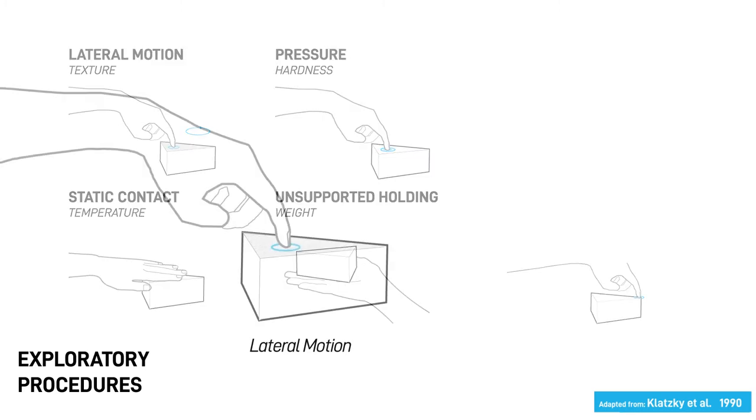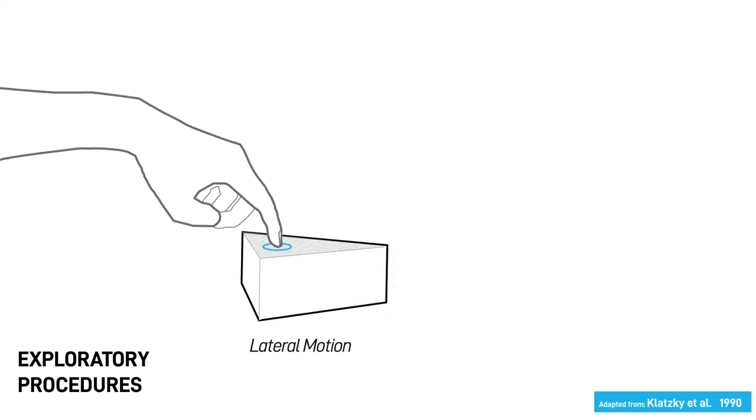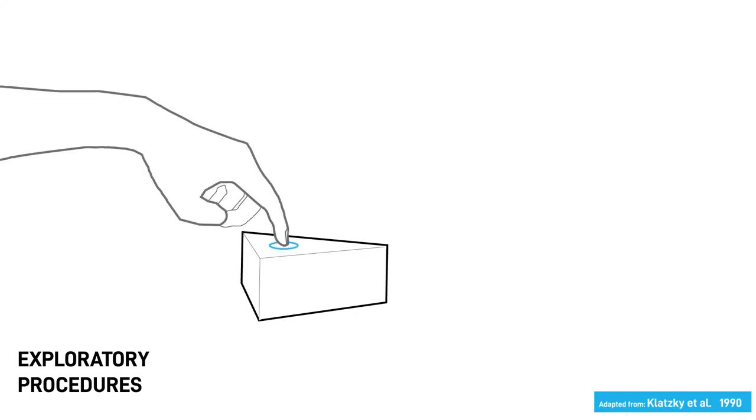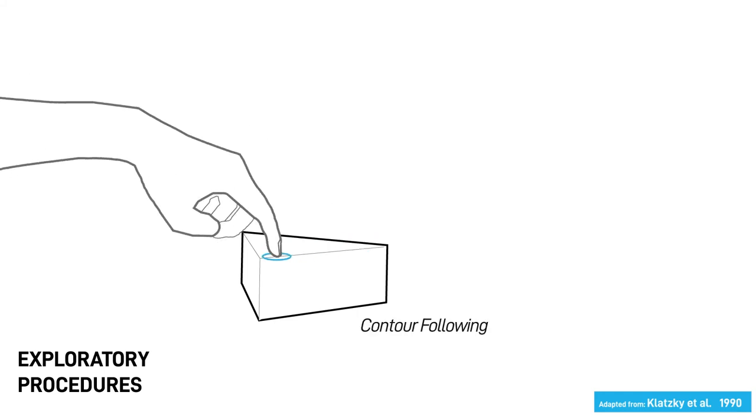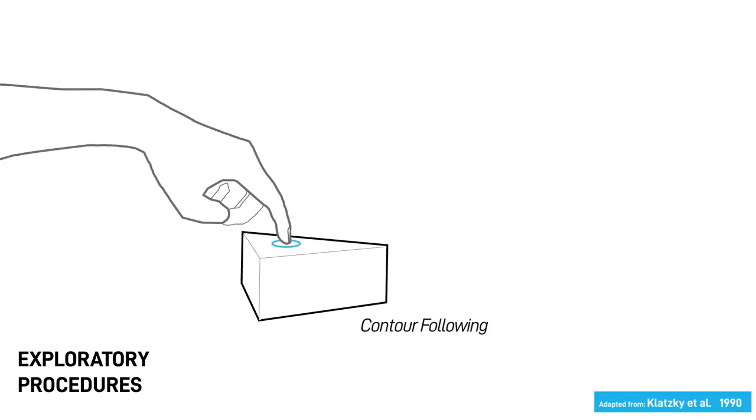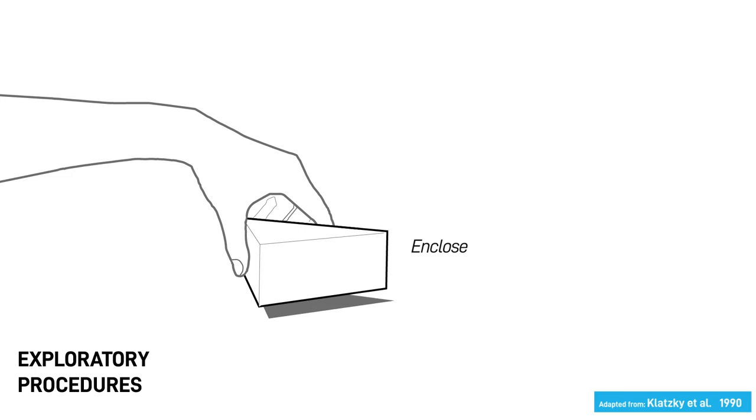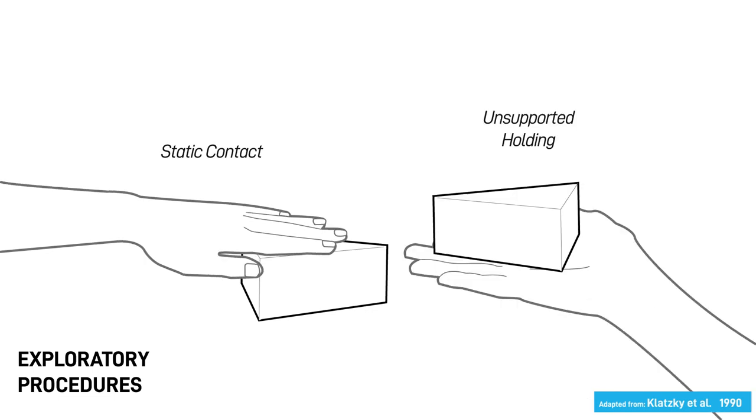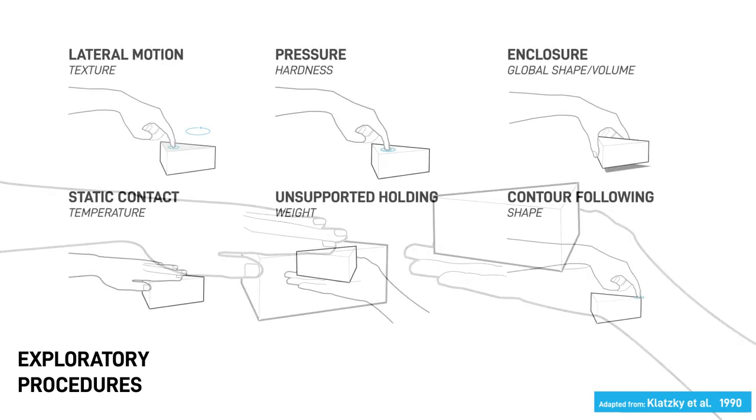To give a few examples, there is lateral motion which is used to discover material texture. When pressure is applied, we can discover the hardness of a material. When we follow the contours of an object, we can understand its shape and when we completely enclose our hand on an object, the global shape along with the volume is understood. There are other procedures such as static contact and unsupported holding. In general, humans are experts at choosing the right gesture for the right task.